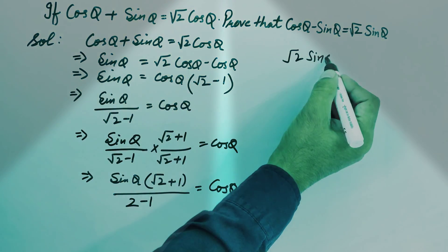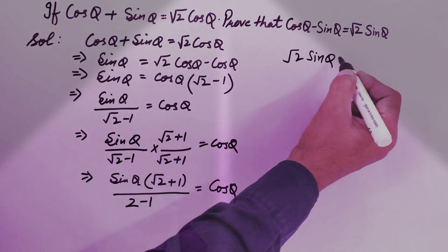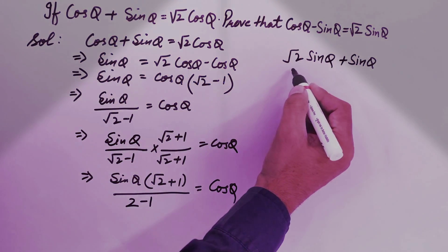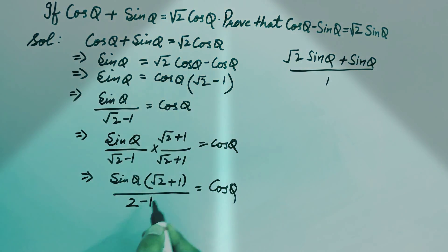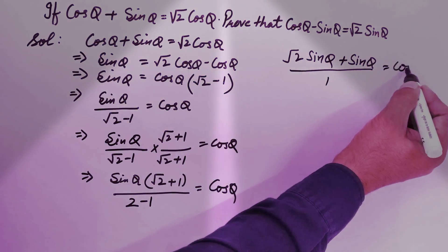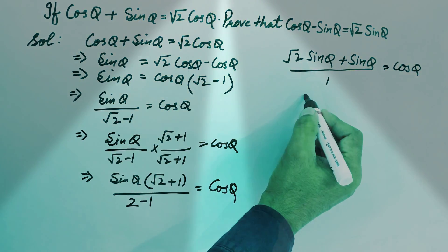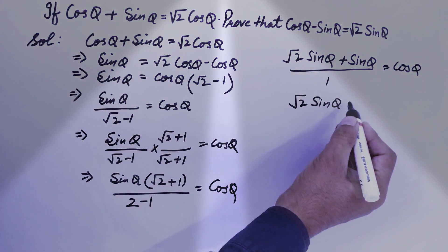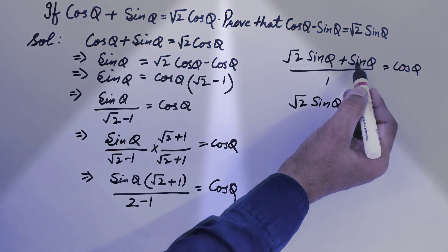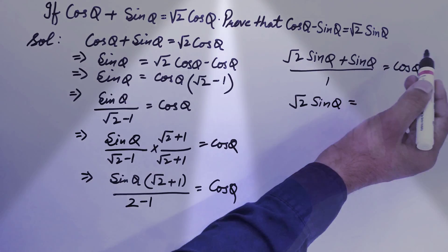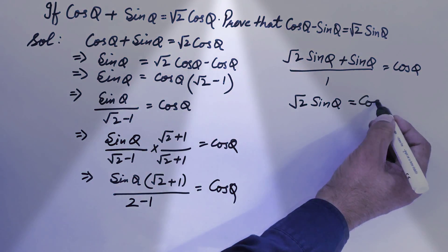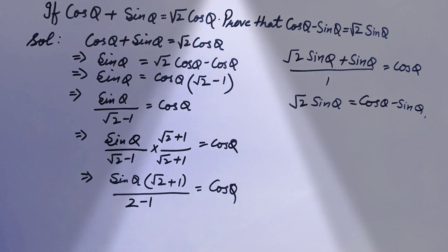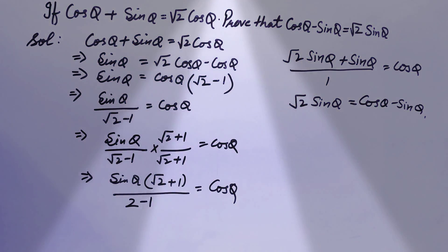So we have (√2 sin θ + sin θ) / 1 = cos θ, which simplifies to √2 sin θ + sin θ = cos θ. Transposing sin θ to the right-hand side, it becomes cos θ - sin θ = √2 sin θ. Hence proved! Thanks for watching.